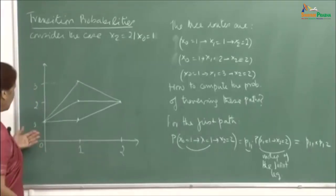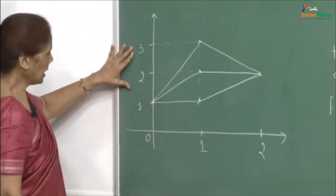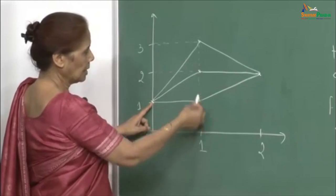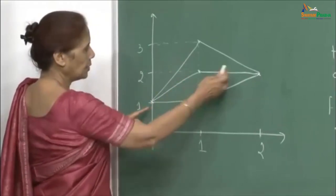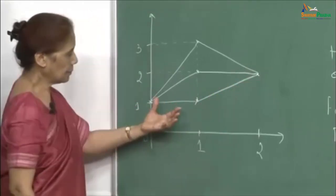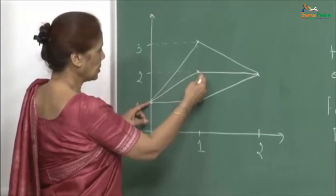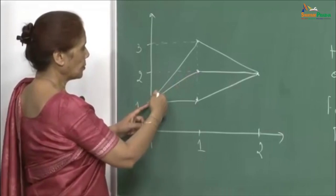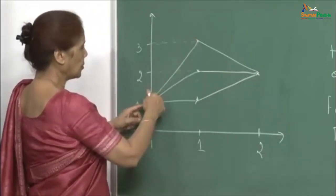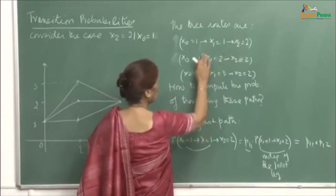The three possible paths would be: at time period 0 the system is in state 1. It transitions to state 1—that is a possibility, because in one step you may transition to 1, 2, or 3, and then you have to come back to state 2. So one possible route would be from 1 to 1 and then 1 to 2. Similarly, you could go from 1 to 2—that means from production to HR and then HR back to HR. Or the third route would be from 1 to 3, meaning from production to sales and then sales to HR. These are the three possible ways; no other route is possible of going from 1 to 2 in two steps.